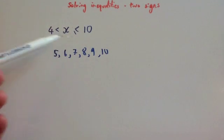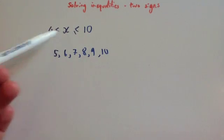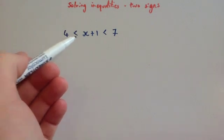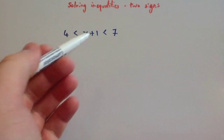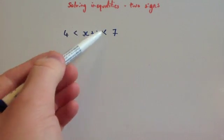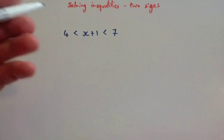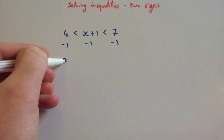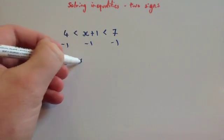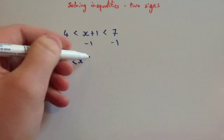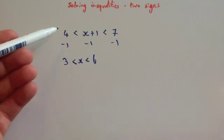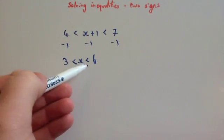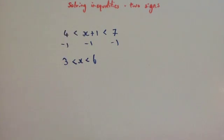If you're solving inequalities with two signs, you just want to make sure you're doing the same thing to both numbers. So let's look at a typical question: solve x plus 1 is bigger than 4 but less than 7. You want x in the middle, so you want to get rid of the plus 1 — take away 1 from everything. 4 take away 1 is 3, x plus 1 take away 1 is x, and 7 take away 1 is 6. So the answer is x is bigger than 3 but less than 6.